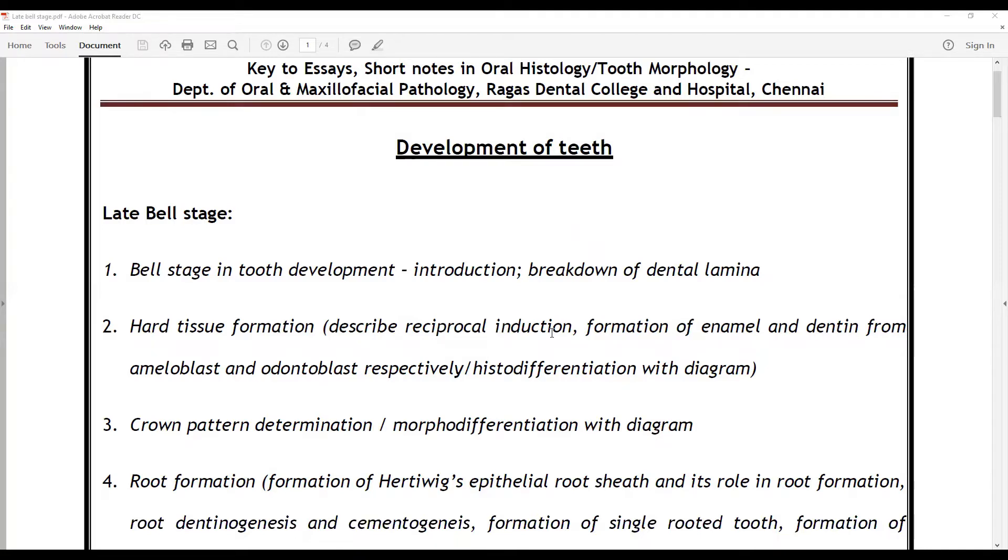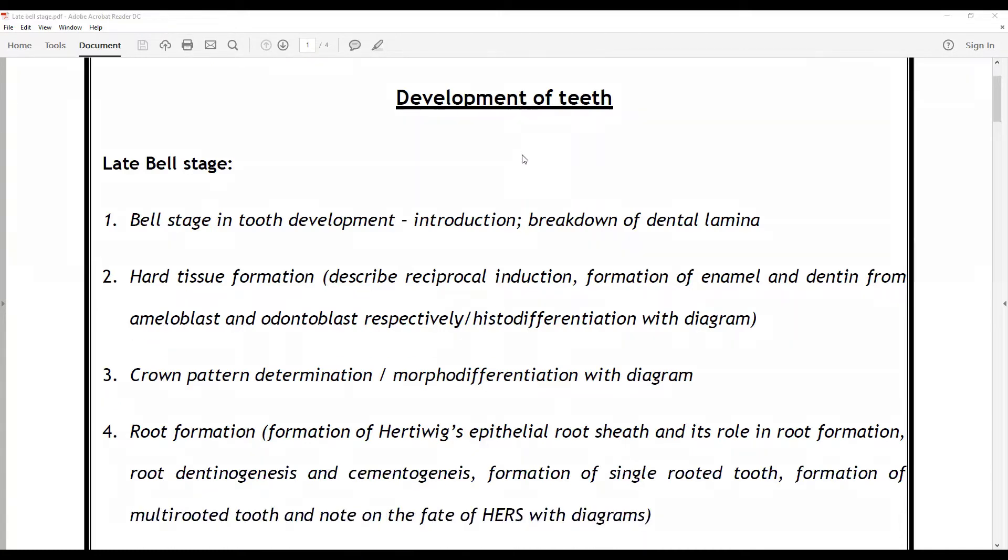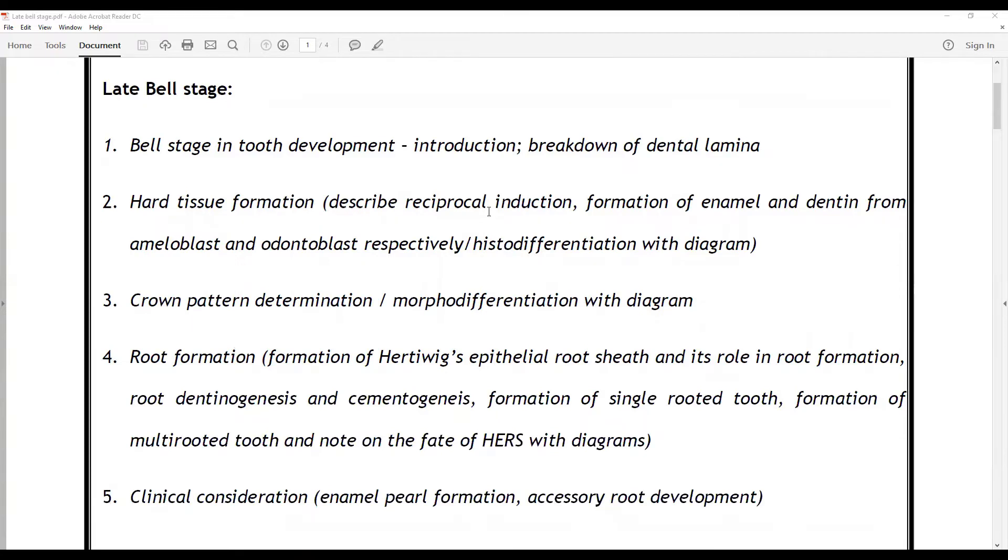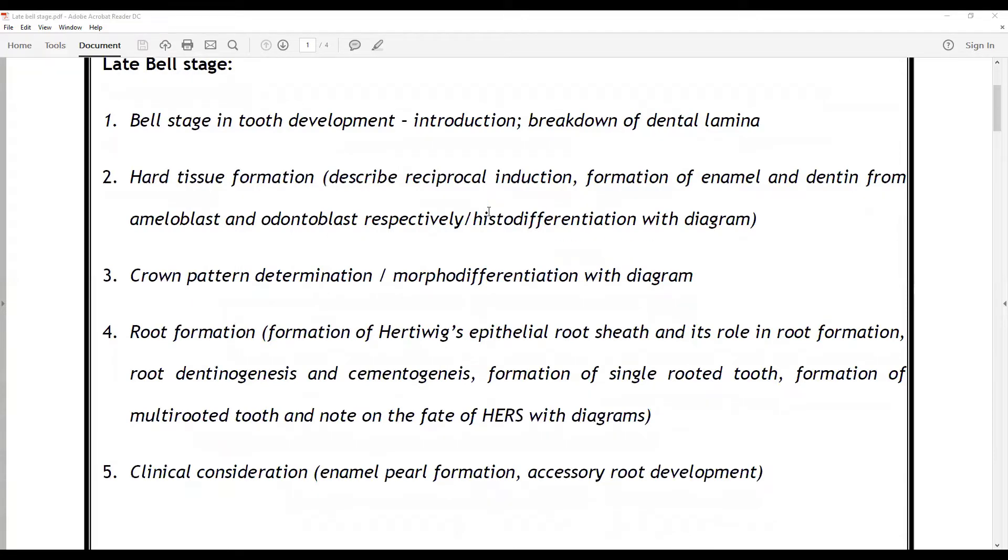Talk about root formation, that is the formation of Hertwig's epithelial root sheath and its role in root formation, root dentinogenesis and cementogenesis. Very briefly, formation of single rooted tooth, formation of multi-rooted tooth, and note on the fate of HERS if possible with diagrams. If it's a short note, you can avoid this root formation part. If it's a part of an essay question, talk about it. And most importantly, add a note on the clinical consideration, namely the enamel plea formation, enamel pearl formation, and accessory root development.